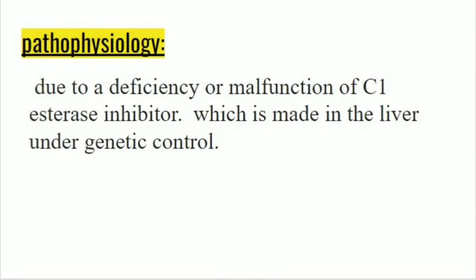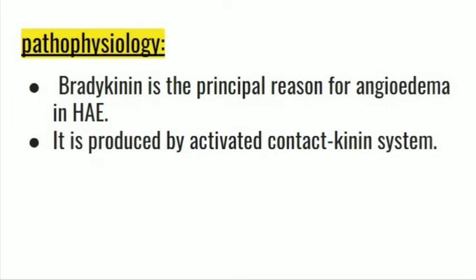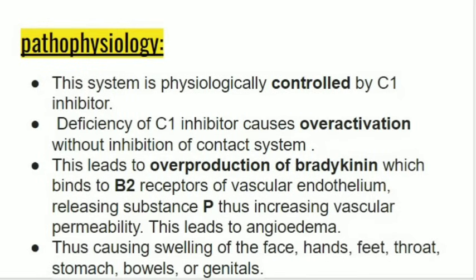Pathophysiology of hereditary angioedema. It occurs due to deficiency or malfunction of C1 esterase inhibitor, also known as C1 inhibitor or C1-INH, which is made in the liver under genetic control. Bradykinin is the principal mediator of symptoms. It is produced by the activated contact kinin system, which is physiologically controlled at many steps by C1 inhibitor. Deficiency of C1 inhibitor causes over-activation of the contact kinin system, leading to over-production of bradykinin.